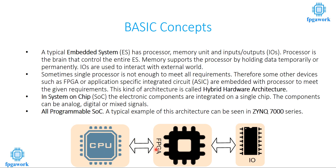We can explain these terminologies with a diagram. For example, if we have a CPU, FPGA, and I/Os connected with each other, that kind of architecture is called hybrid hardware architecture. If these components are integrated on a single chip, that kind of chip is called a SoC. And if all three components are programmable, then this SoC is called an APSoC. A Zynq 7000 architecture is an example of APSoC, which answers the question of what the Zynq 7000 architecture is.